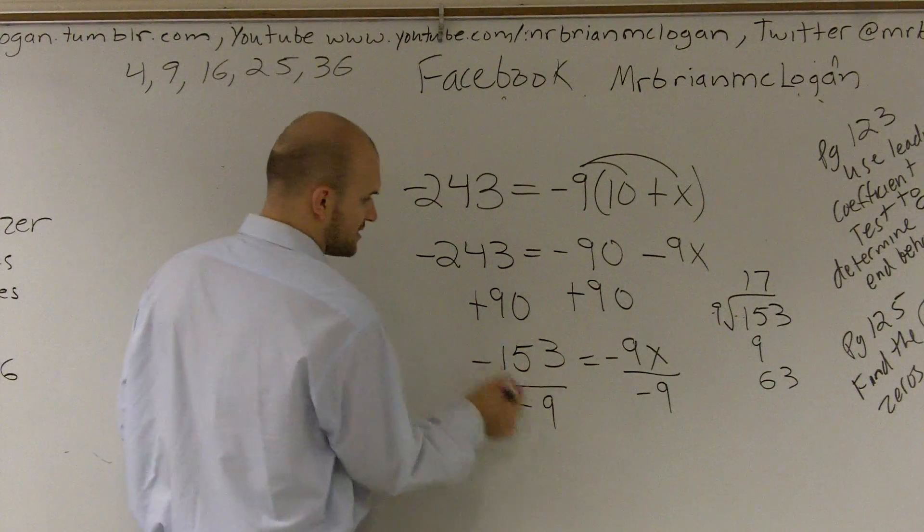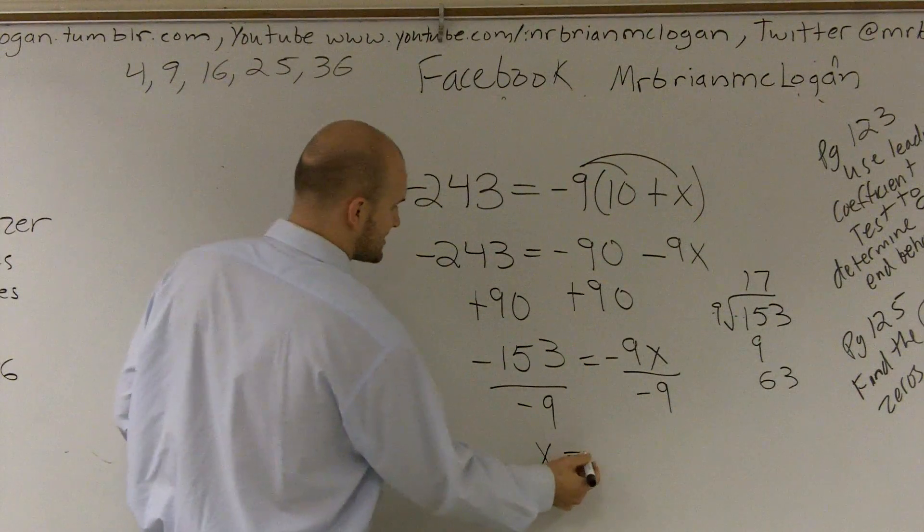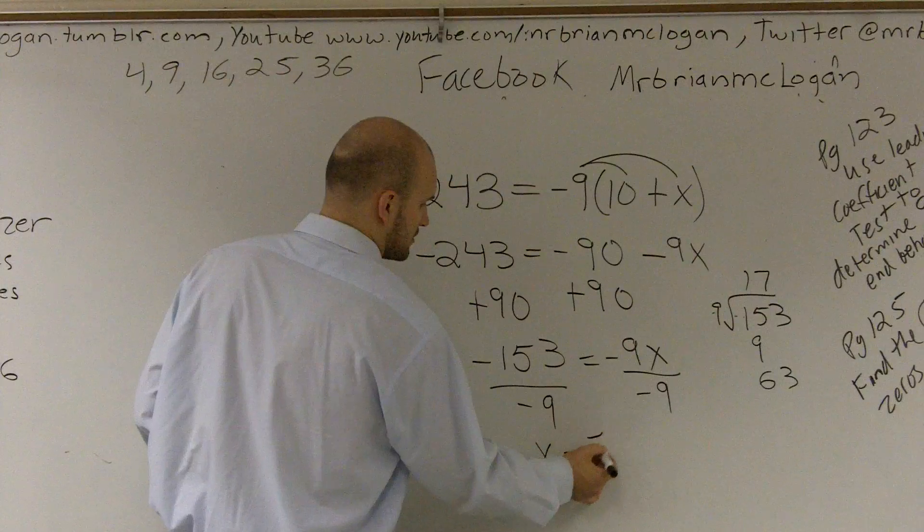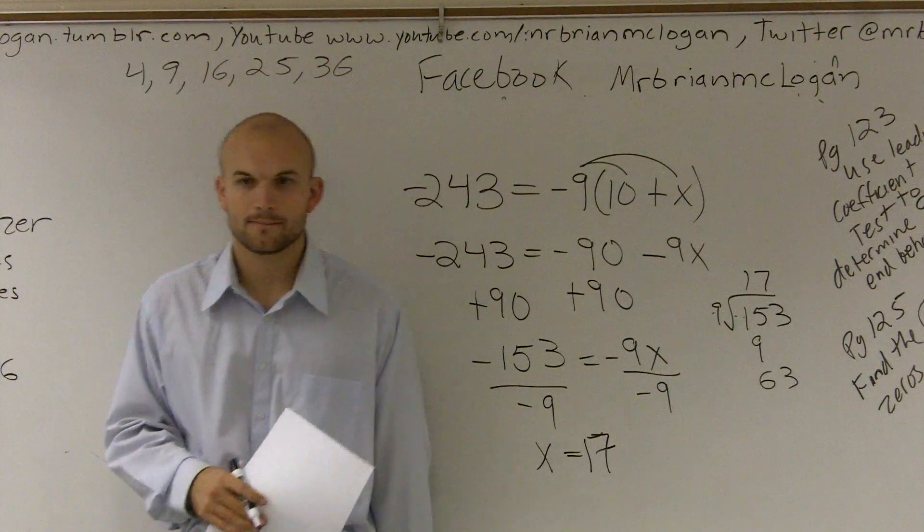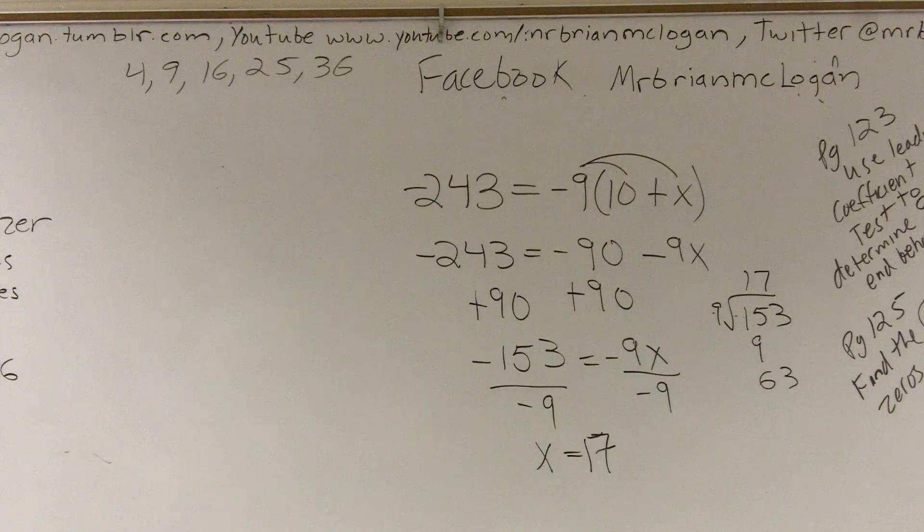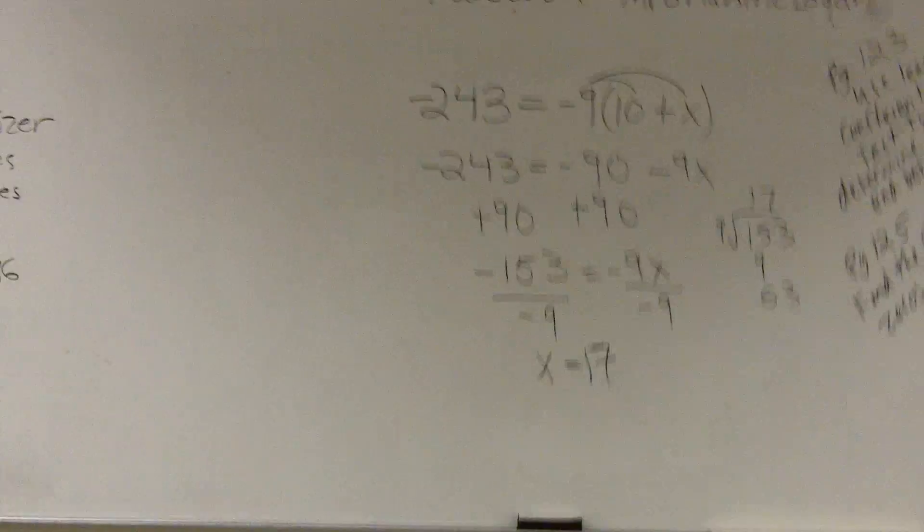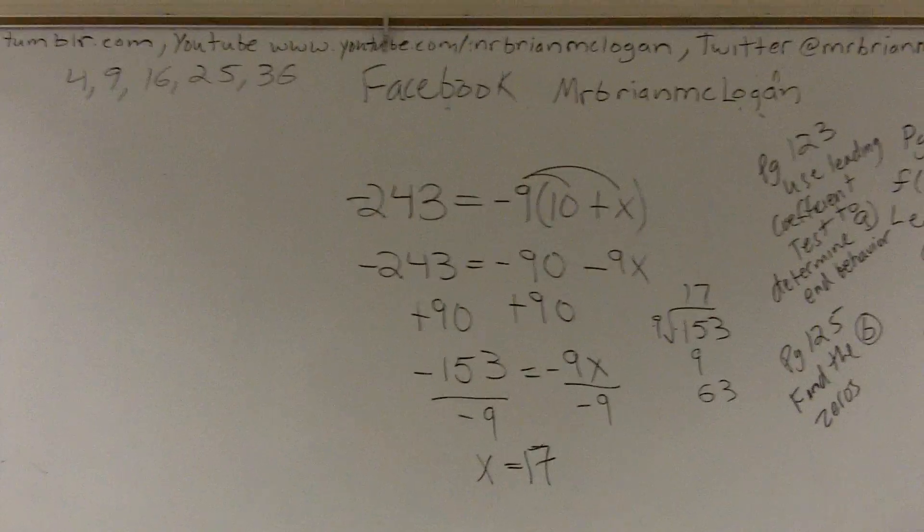So, therefore, a negative divided by negative gives you a positive. So, x equals 17. Alright? That's it. You guys about ready to do this?